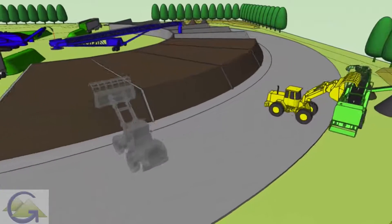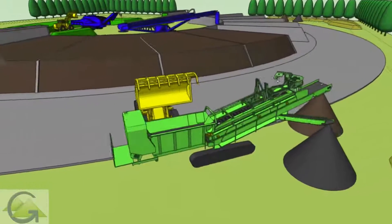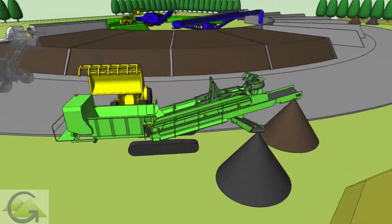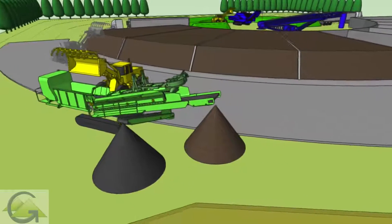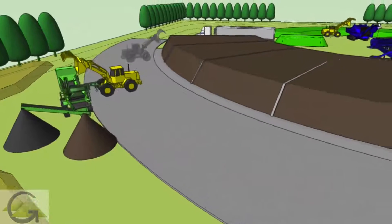Finished compost is pulled out from the outer sides of the curved ASP area, then screened using a portable screener. Finished product is stored in the corners with air underneath to keep the products fresh until ready for sale.